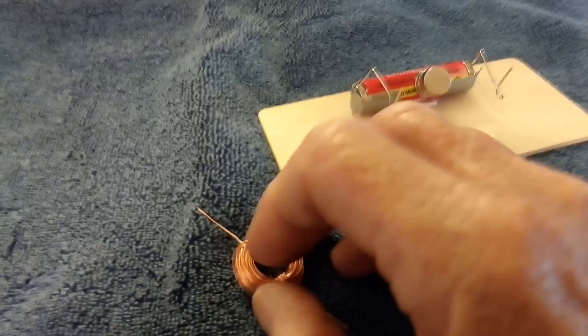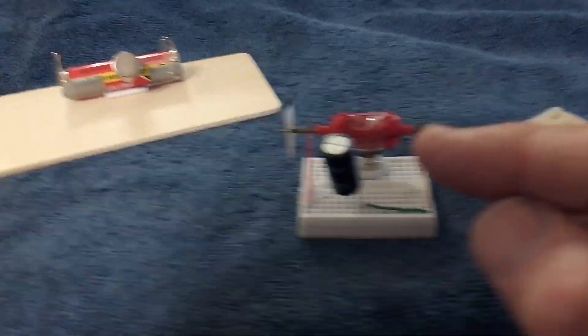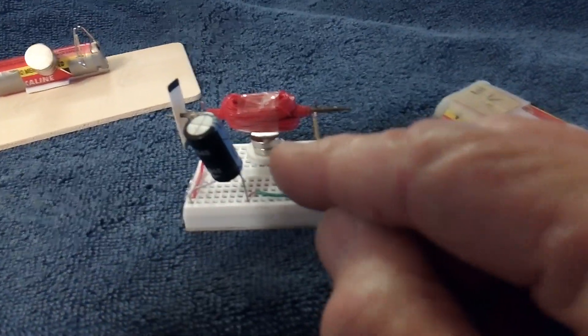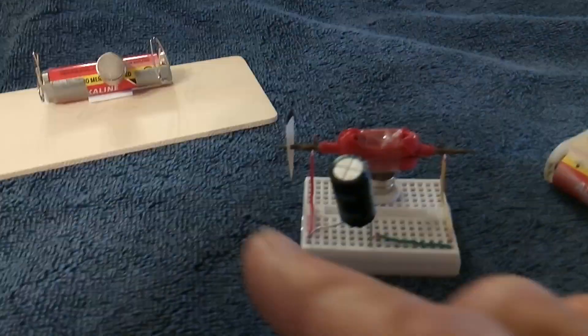But anyway, I went a little further with this and built this. It's the same idea—just a coil of wire, permanent magnet down there. It's insulated wire where the insulation stripped off here and stripped off there.